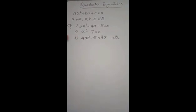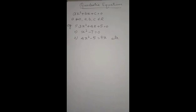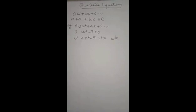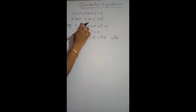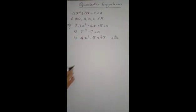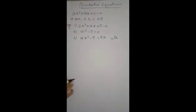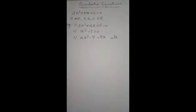What is a quadratic equation? It is a second degree equation with one variable. Here you can see there is a variable x with the highest power 2 — it is a second degree equation in one variable — and in all these three examples you can see the same.